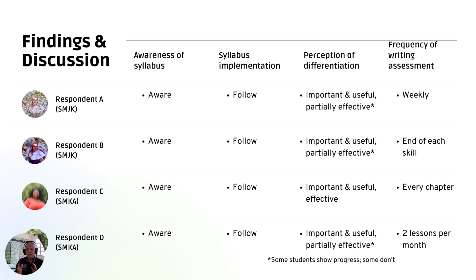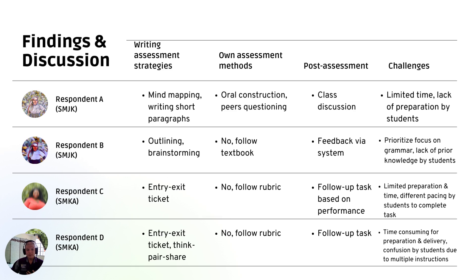When it comes to frequency of writing assessment, each respondent varies. Respondent A does it weekly; Respondent B said at the end of each skill; C is every chapter; and D is two lessons per month. Different teachers also employ different strategies.